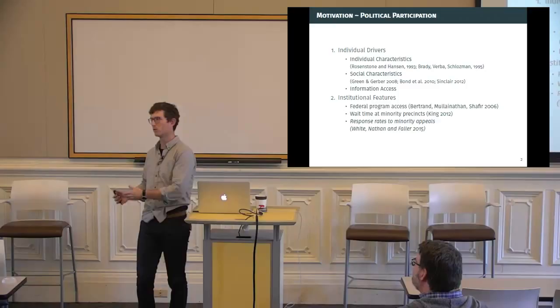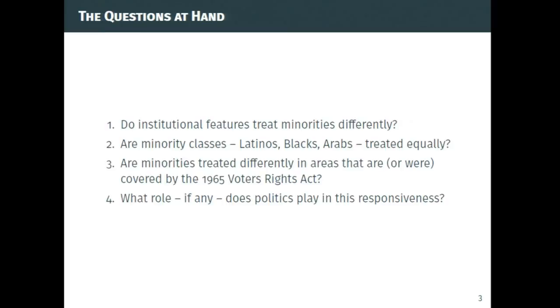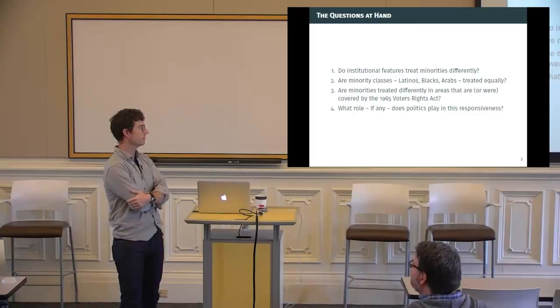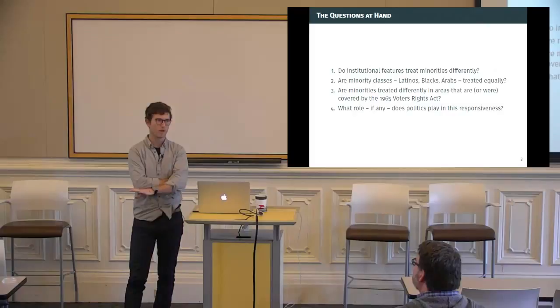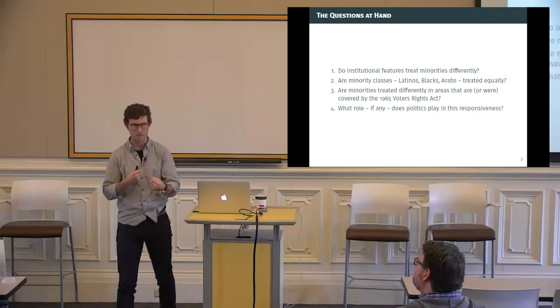The research question, we boil it down into four research questions. First, do institutions treat minorities differently than majorities? Second, are minority classes, because we're going to identify three different classes of minorities—Latinos, Blacks, and Arabs—are they treated equivalently? Are they treated differently within the minority category? Third, are minorities treated differently in areas that are or were covered by the 1965 VRA. The Voting Rights Act was passed in response to discriminatory voting practices in the South. And the fourth is, what role, if any, does politics play in the responsiveness?